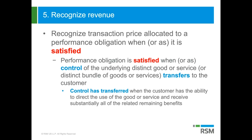You satisfy a performance obligation when or as control of the underlying distinct good or service gets transferred to the customer. Control has been transferred when the customer has the ability to direct the use of the good or service and to receive substantially all of the related remaining benefits.